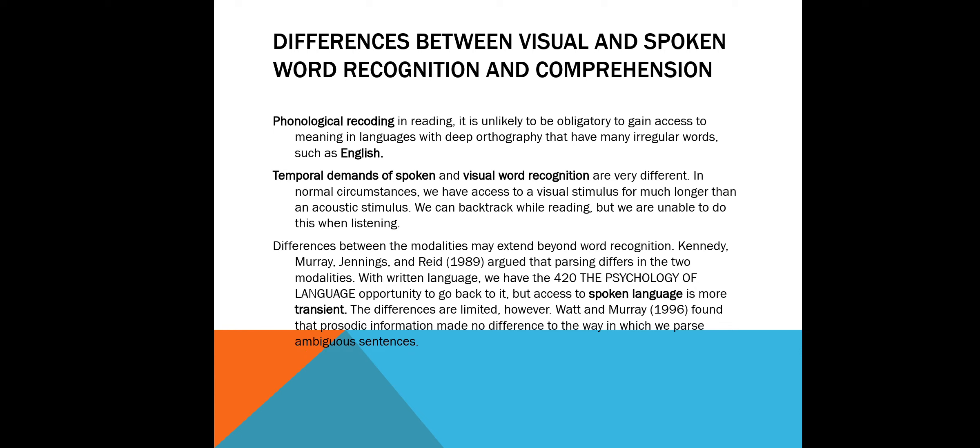Let's go on with the differences between visual and spoken word recognition and comprehension. First, we have phonological recoding in reading. It is unlikely to be obligatory to gain access to the meaning in languages with a deep orthography that have many regular words, such as English. The temporal demands of spoken and visual word recognition are very different. In normal circumstances, we have access to a visual stimulus for much longer than an acoustic stimulus. We can backtrack while reading, but we are unable to do this when listening.